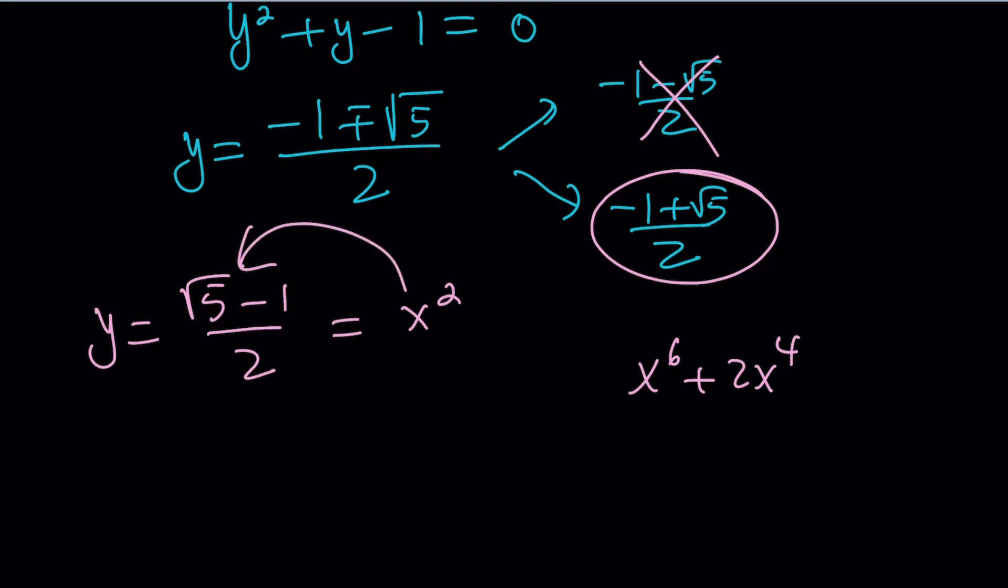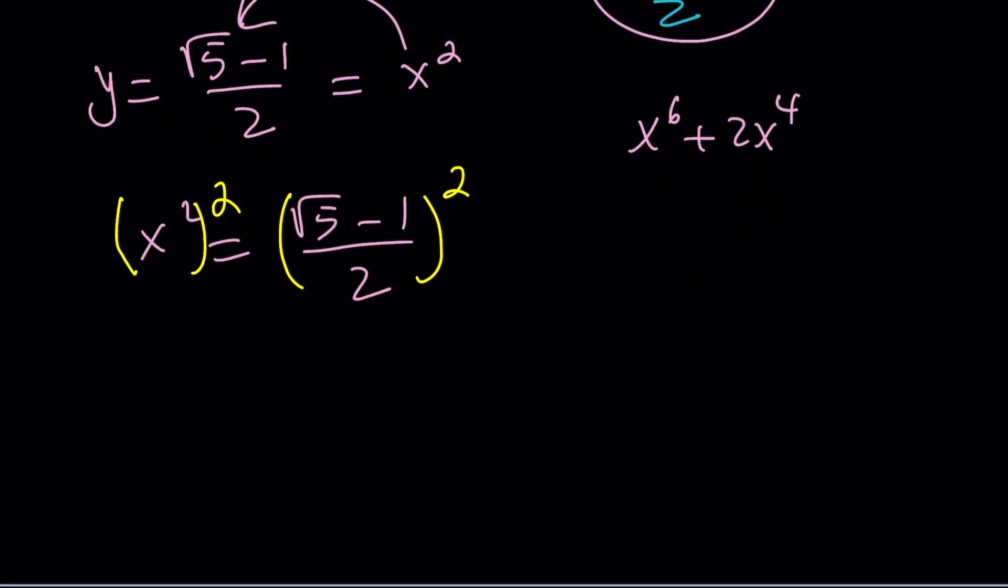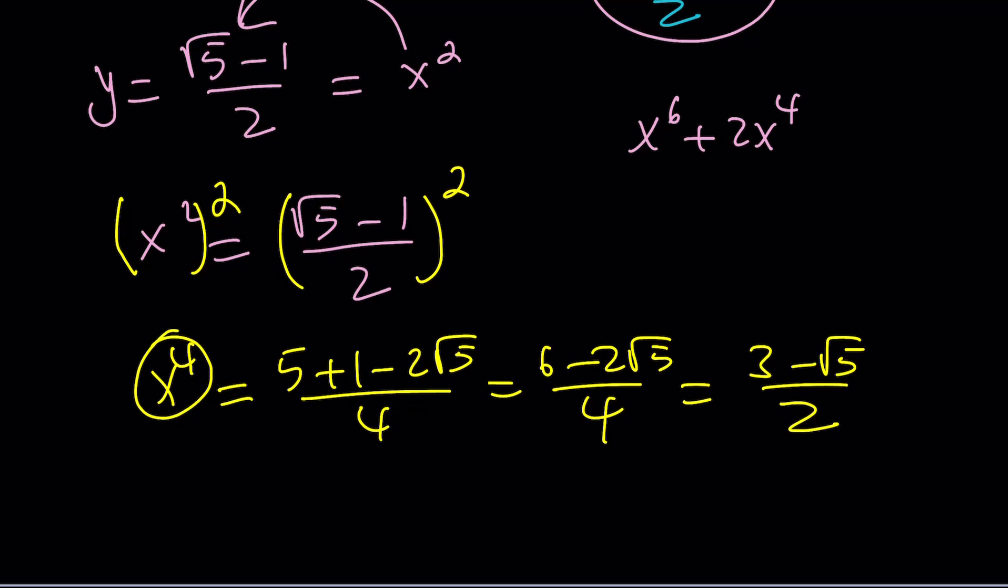So let's go ahead and write this one more time. Let me write it with the x squared on the left hand side and then square both sides. I'm going to square this and I'm going to square that. That's going to give me x to the fourth power equals 5 plus 1 minus 2 root 5 divided by 4. That's 6 minus 2 root 5 divided by 4. And that's actually 3 minus root 5 divided by 2. So that's x to the fourth power.